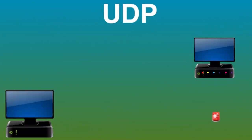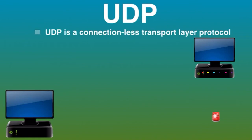Now let's talk about UDP. UDP stands for User Datagram Protocol. UDP does not require a handshake — it is a connectionless transport layer protocol that provides a simple but unreliable message service. Unlike TCP, UDP adds no reliability, flow control, or error recovery.